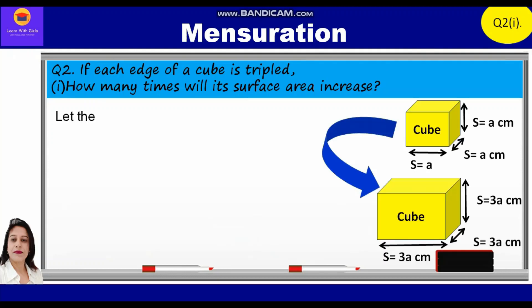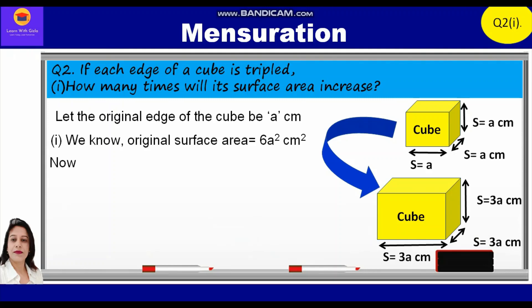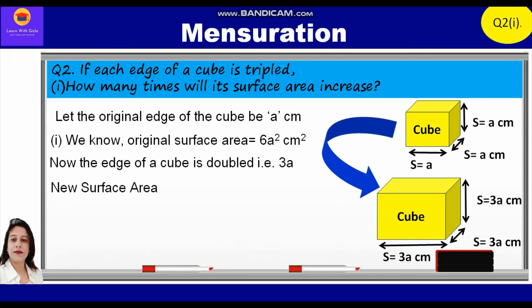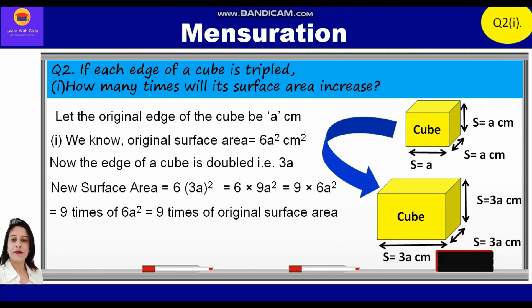Let the original edge of the cube be 'a' centimeters. We know the original surface area is equal to 6a². Now the edge of a cube is tripled, that is 3a. So the new surface area is equal to 6 × (3a)² = 6 × 9a² = 9 × 6a² — here we have just interchanged the places of 9 and 6 — further, equal to 9 times of 6a² = 9 times of the original surface area. Therefore, the new surface area will be 9 times the original surface area.